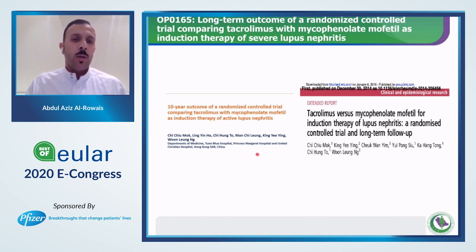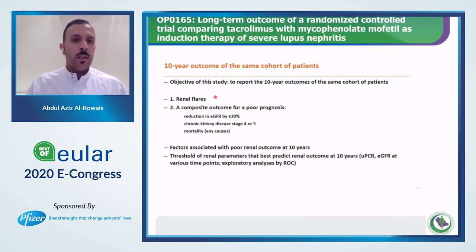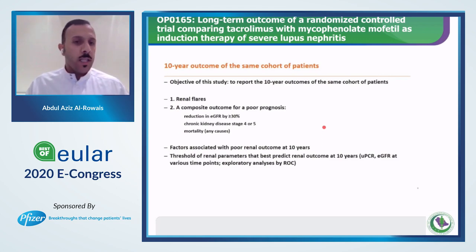They looked at differences in renal flares, composite outcome for poor prognosis including reduction in GFR by 30% or more, chronic kidney disease stage 4 or 5, and mortality due to any cause, as well as factors associated with poor renal outcome at 10 years. The original study included 150 patients; around 80% had good clinical response and were maintained on azathioprine. A few required re-induction with rescue therapies — cyclophosphamide, or shifting between MMF and tacrolimus, or adding either to the other.